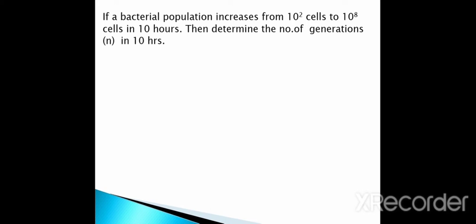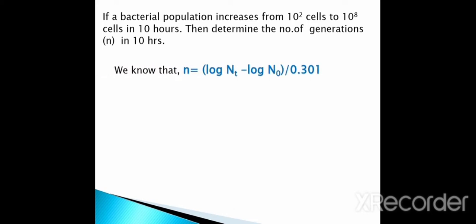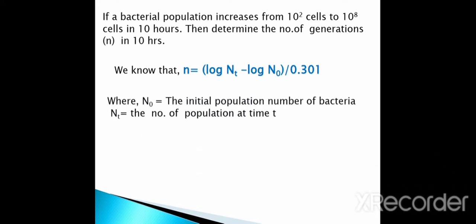The next question: if a bacterial population increases from 10^2 cells to 10^8 cells in 10 hours, determine the number of generations in 10 hours. The formula is: N = (log Nt − log N0) / 0.301, where N0 is the initial population and Nt is the population at time t. Here N0 = 10^2 cells and Nt = 10^8 cells.